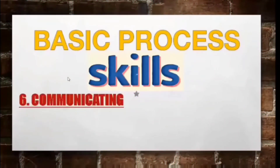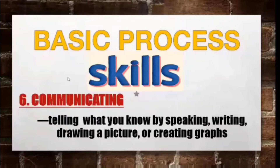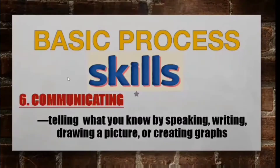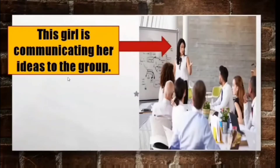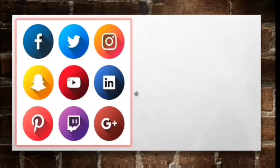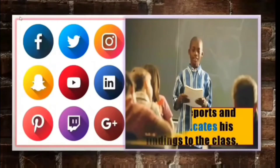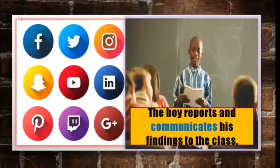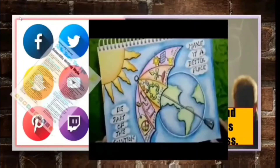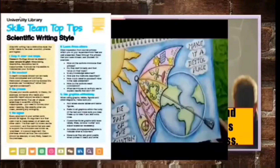Skill number six: communicating. Communicating is the skill of telling or sharing with others what you know by speaking, writing, drawing a picture, or creating graphs. It means sharing your ideas in any way you can. The girl in the picture is communicating her ideas to a group by speaking. We can also share our ideas by posting on social media accounts like Facebook, Twitter, and Instagram, by reporting in front of the class, or through arts like painting, drawing, dancing, singing, writing a poem, or a narrative report.